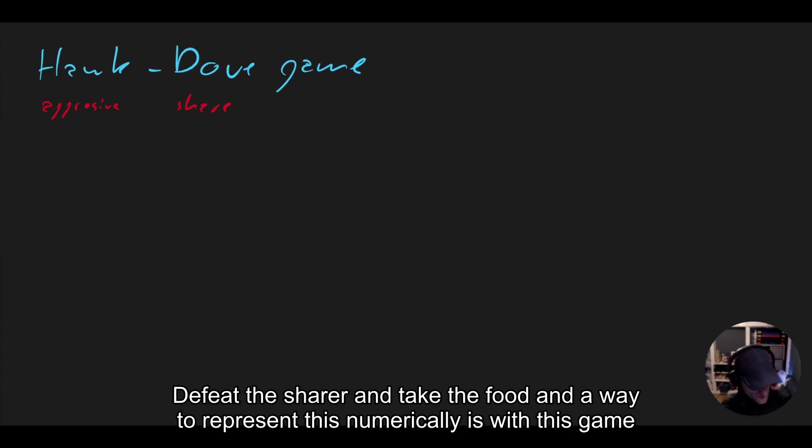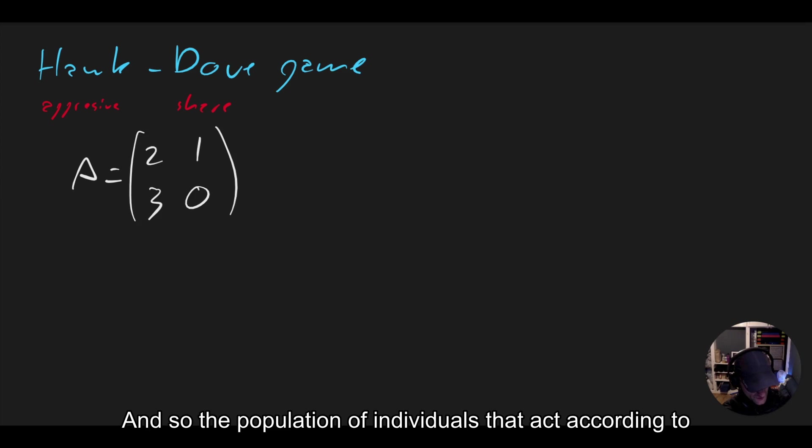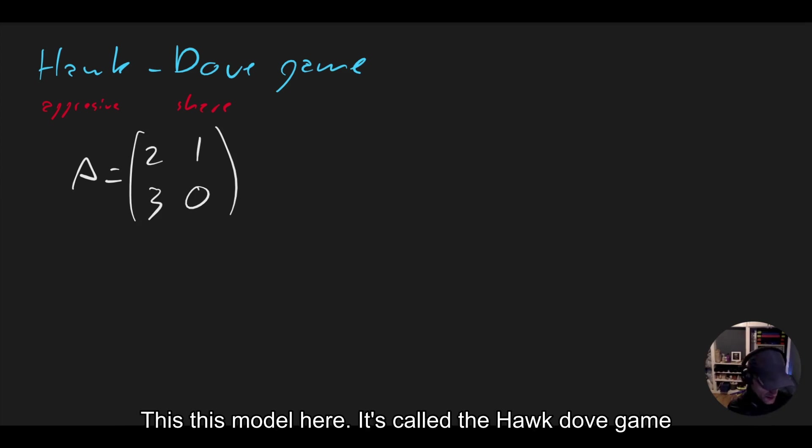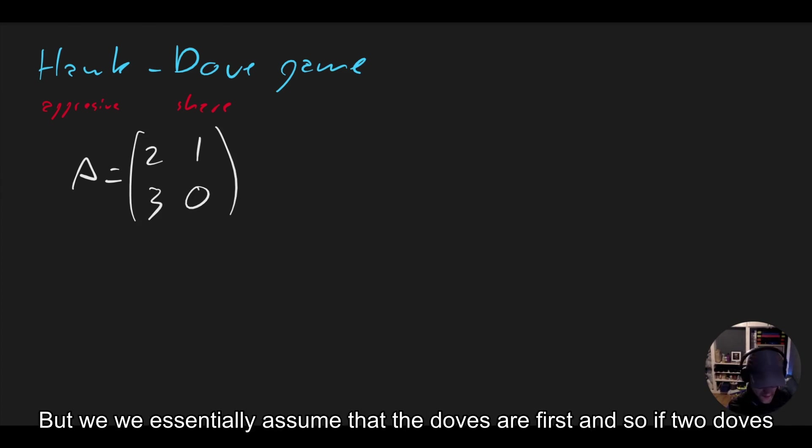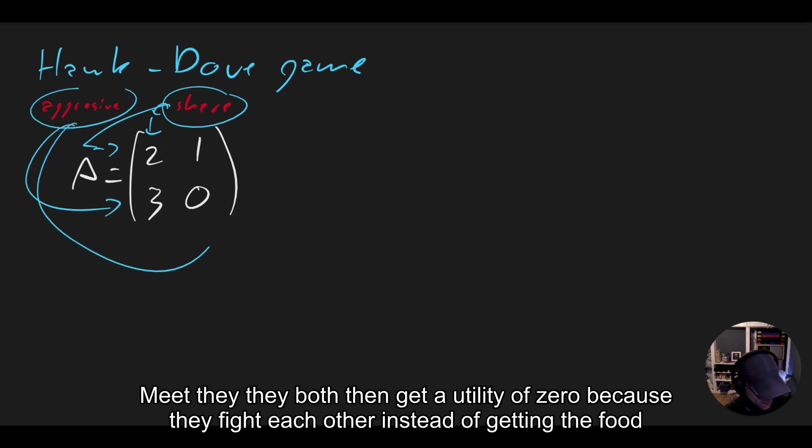And a way to represent this numerically is with this game, this matrix here. And so we have a population of individuals that act according to this model here. It's called the Hawk-Dove Game, but we essentially assume that the doves are first. And so if two doves meet, if two sharers meet, they both get a utility of two. And if two aggressive animals meet, they both then get a utility of zero because they fight each other instead of getting the food.